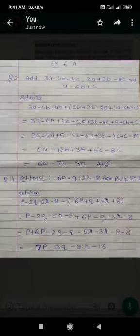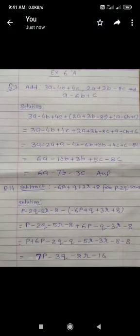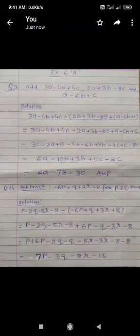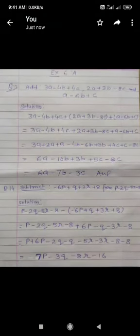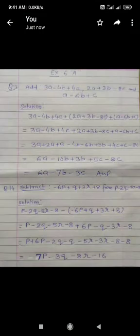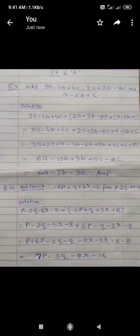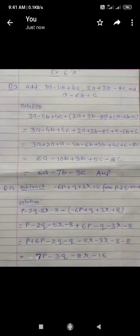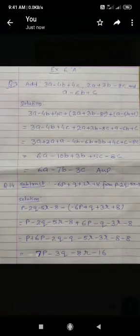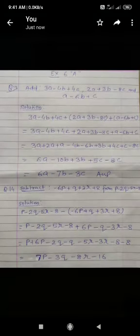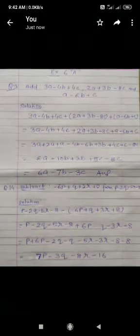Then we rearrange the terms. Like terms: P plus 6P, both are positive, then we write 7P minus 2Q minus Q. Both are negative, then we add, but sign is negative. So 2 plus 1 is equal to 3Q. Similarly, 5R and 3R, both are negative, then we add it. We got 8R, but sign is negative.